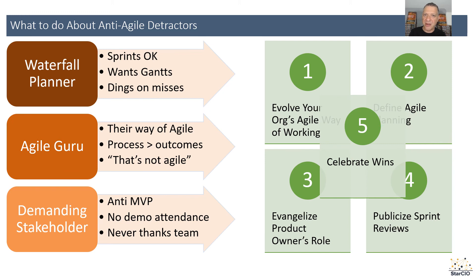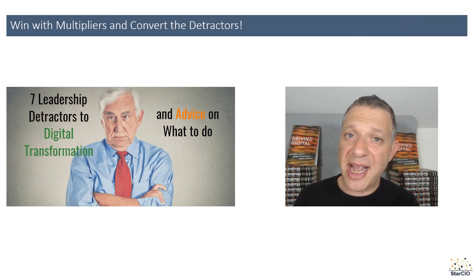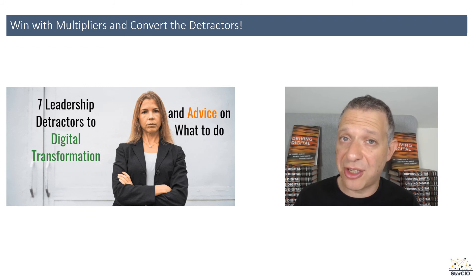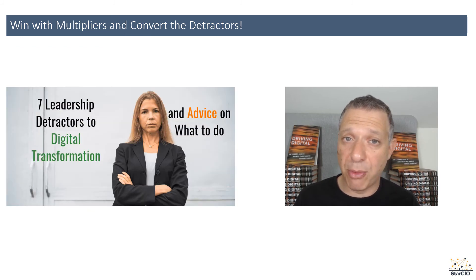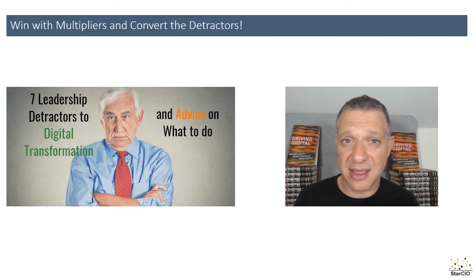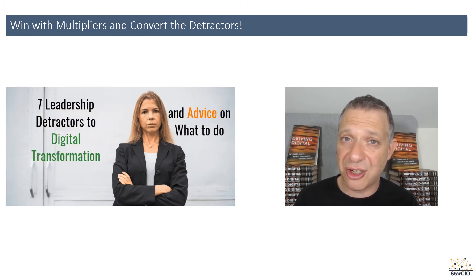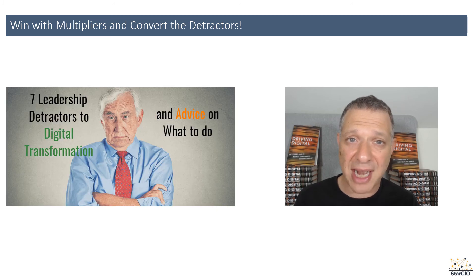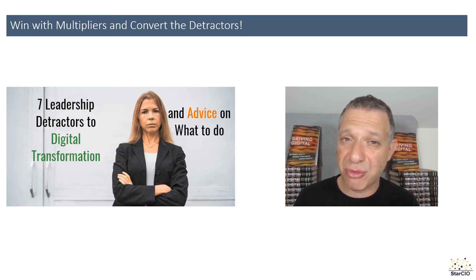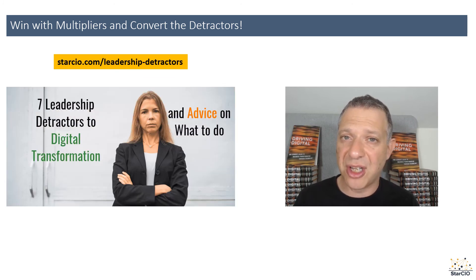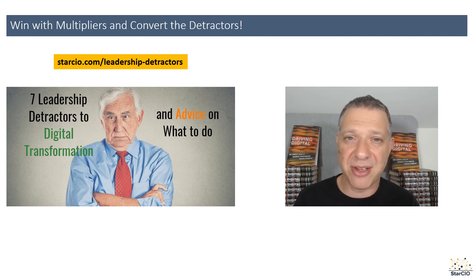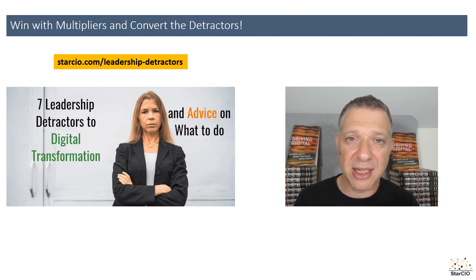So to recap: today I shared three different types of anti-agile detractors and five different things that can start bringing them on board to your agile culture, practices, and mindsets. If you're facing these issues and want to learn more about handling detractors, please see my most recent blog post at starcio.com/leadership-detractors, where I share seven leadership detractors that are impacting your programs.